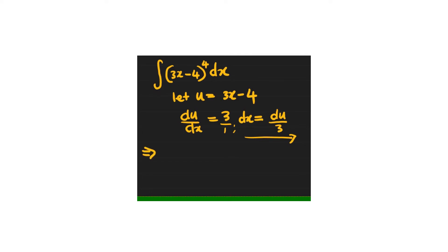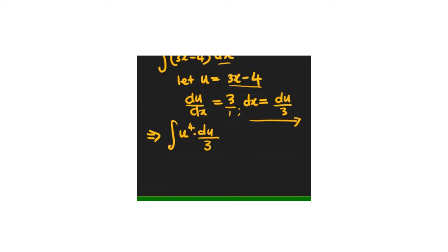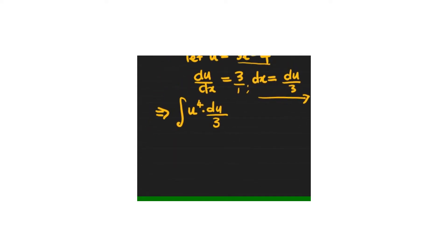It now becomes the integration of (3x − 4), which is u, so it becomes u to the power of 4 multiplied by dx. This dx is now given by du over 3. Going forward, 1 over 3 is a constant — you can put it outside the integral sign: 1/3 times the integration of u to the power of 4 du.